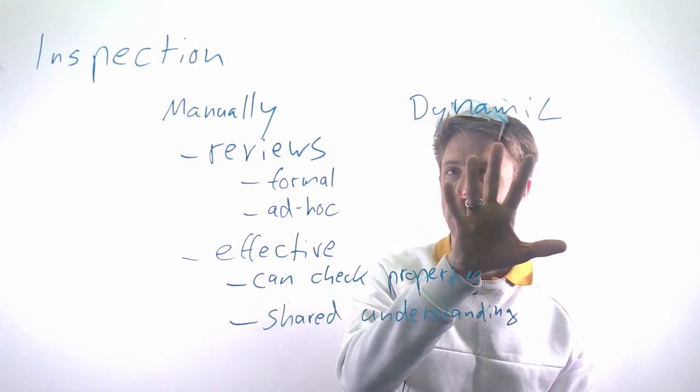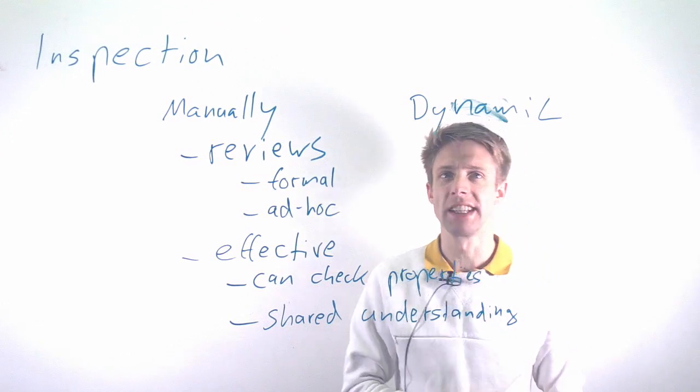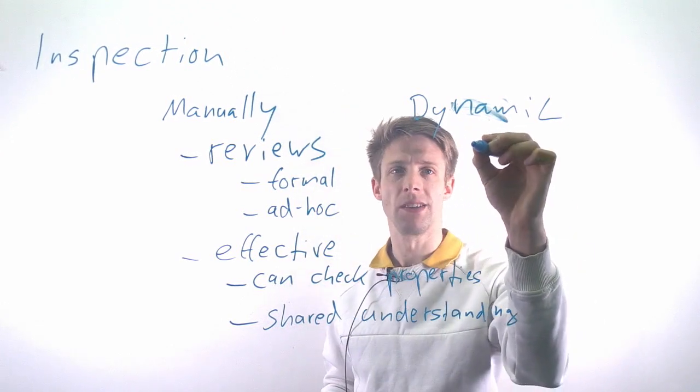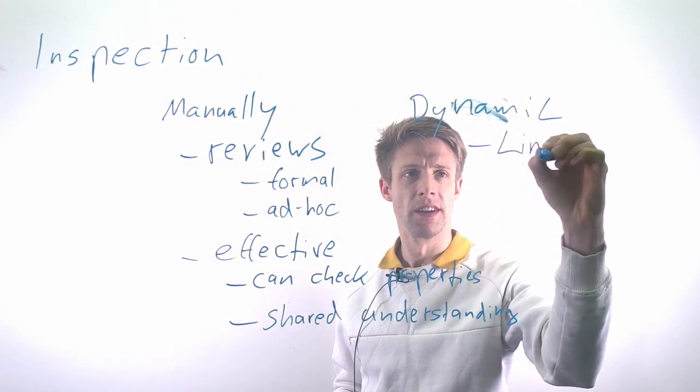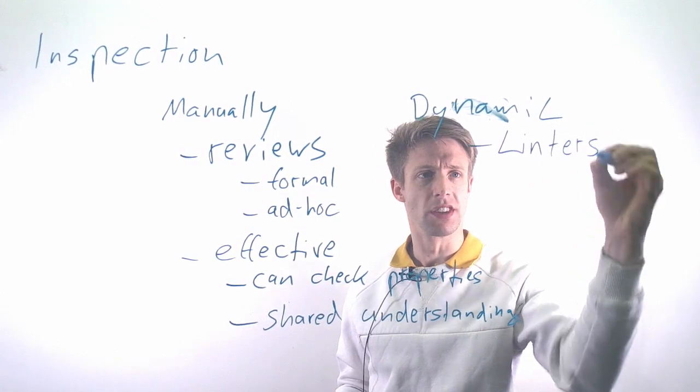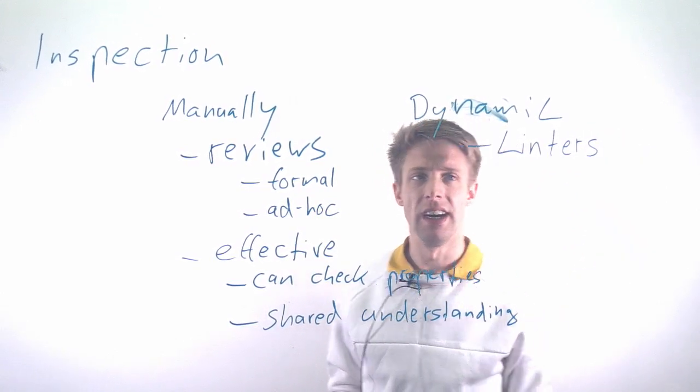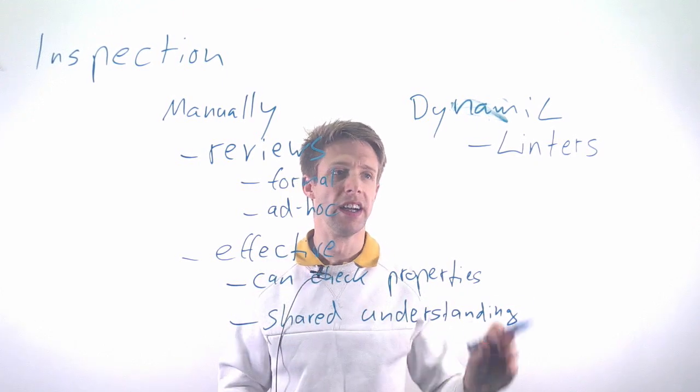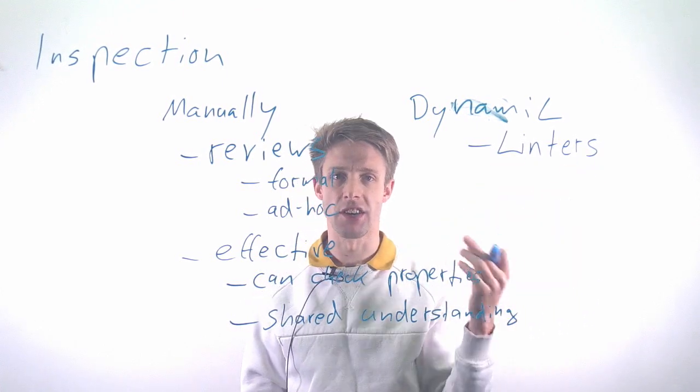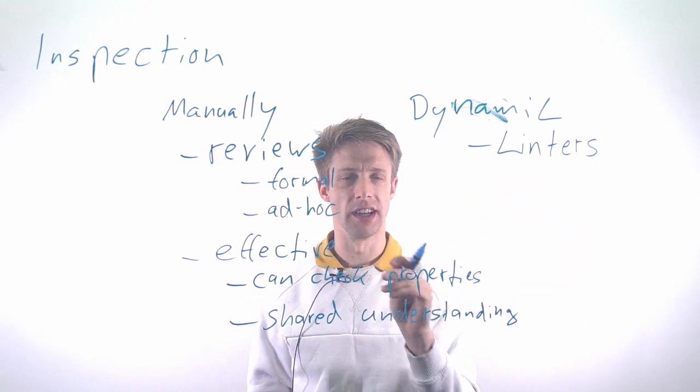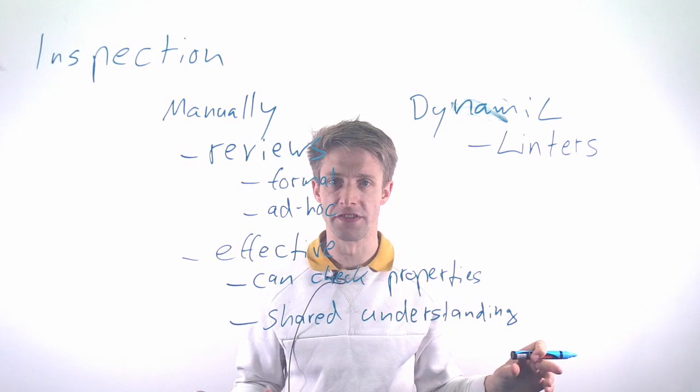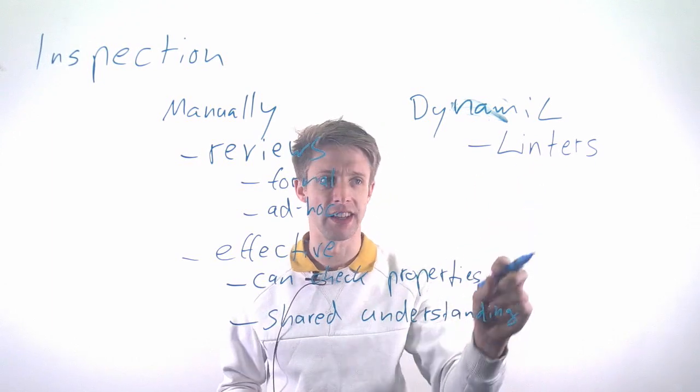We should also mention that we have dynamic or automated ways of doing inspection. For example, there are tools called linters that can automatically check code for style violations. You might have a certain coding style that people have to follow, and the tool automatically detects violations.